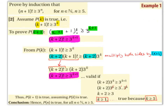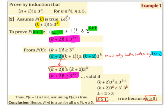Step 2: Assume P(k) is true, i.e. (k+1)! ≥ 3^k. We've just swapped each n for k. This is our assumption.